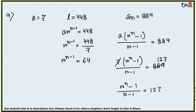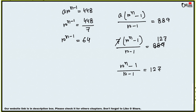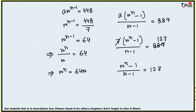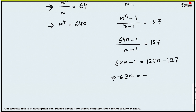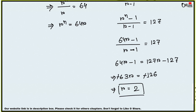From rⁿ⁻¹ = 64: rⁿ = 64r. Substituting into (rⁿ − 1)/(r − 1) = 127: (64r − 1)/(r − 1) = 127. Cross multiplying: 64r − 1 = 127r − 127, so 126 = 63r, giving r = 2. Sum number 9 done.